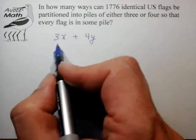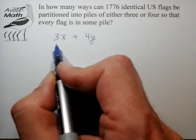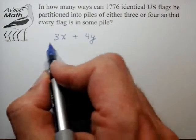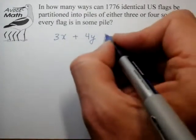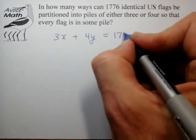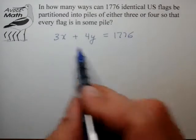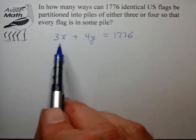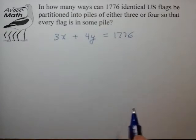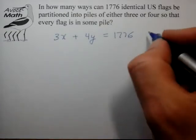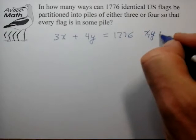The condition merely states that when you take the number of flags in the 3 piles and the number of flags in the 4 piles, they should add up to 1776. And it's only when you write this out that you realize this is really just a linear two-variable Diophantine problem where we're solving for x and y that are integers.